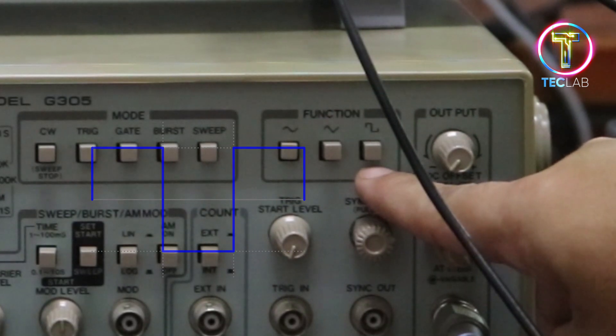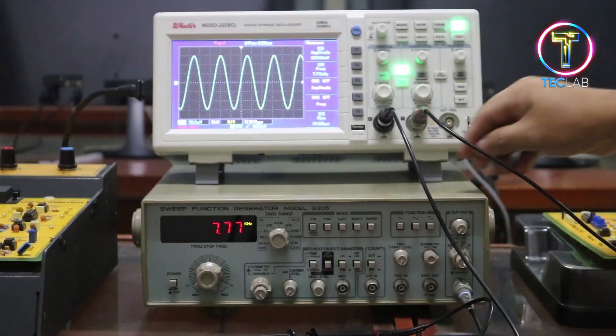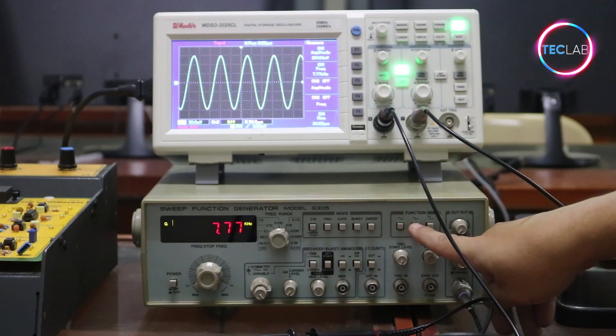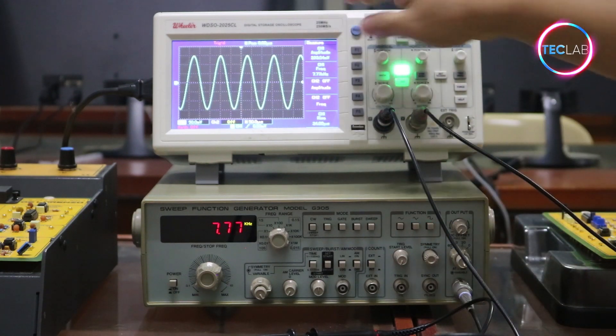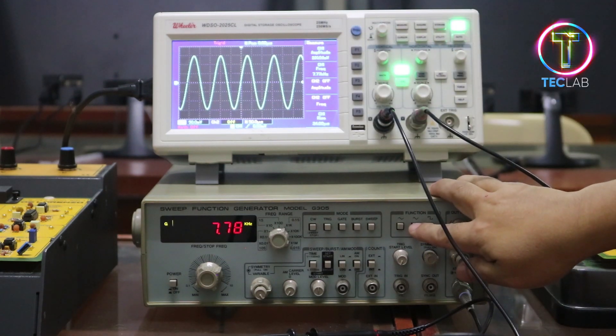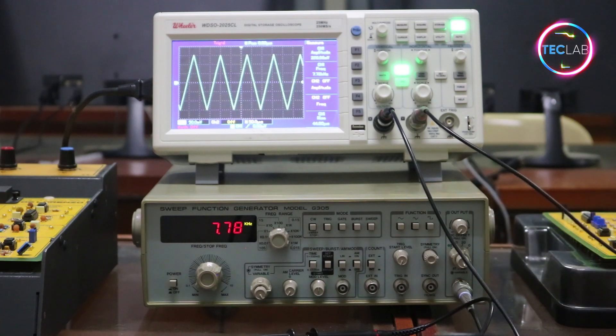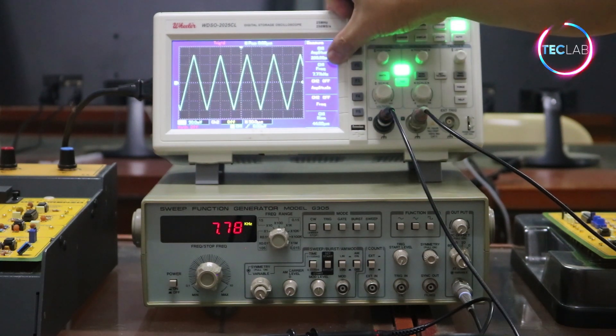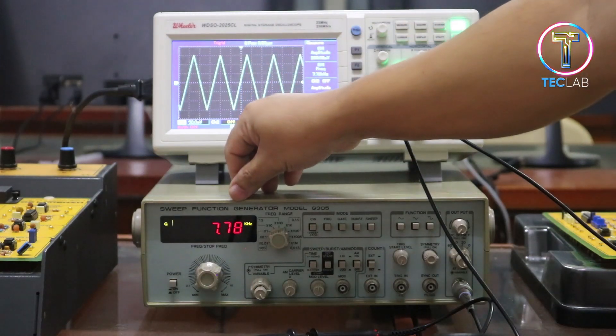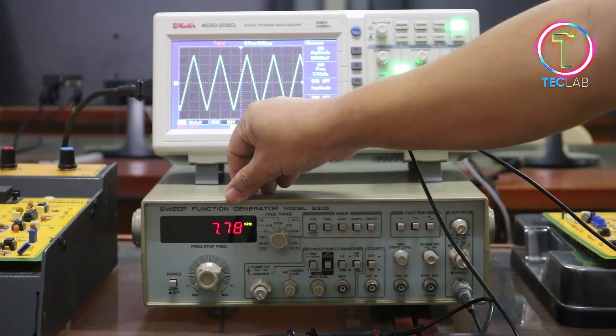I will push the triangular signal button to observe what will happen on the output of our oscilloscope. It should show a triangular waveform. As you can see, there is a triangular waveform having the same frequency that is 7.78 kilohertz, and it is being displayed at your function generator.